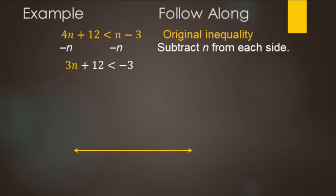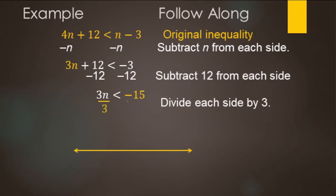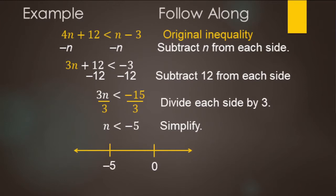Now we have a two-step inequality. We subtract 12 from both sides: 3n is less than negative three minus 12. Think of paying $3 and $12 — a total of $15 — so negative 15. Then divide by positive three: n is less than negative five. For the number line, we include zero and negative five. It's strictly less than, so negative five gets an open circle, and we shade to the left for numbers smaller than negative five.